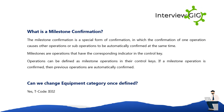What is a milestone confirmation? The milestone confirmation is a special form of confirmation in which the confirmation of one operation causes other operations or sub-operations to be automatically confirmed at the same time. Milestones are operations that have the corresponding indicator in the control key. If a milestone operation is confirmed, then all previous operations are automatically confirmed.